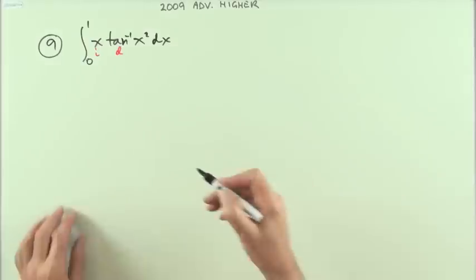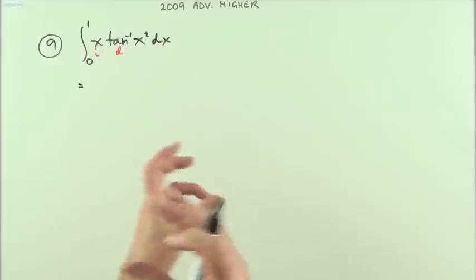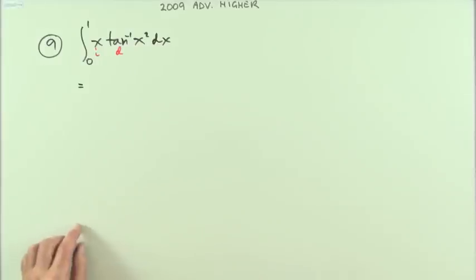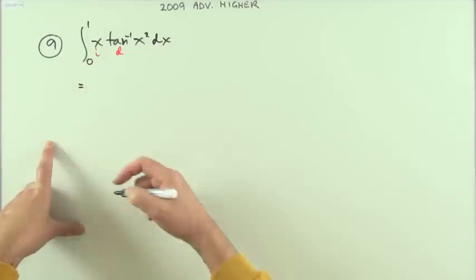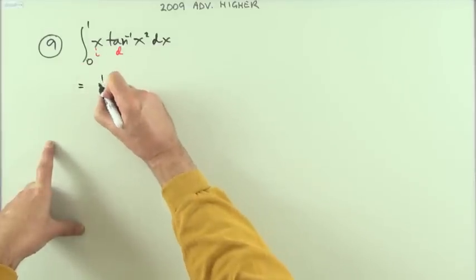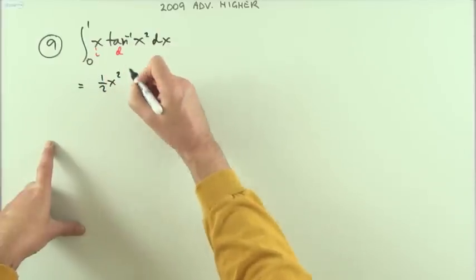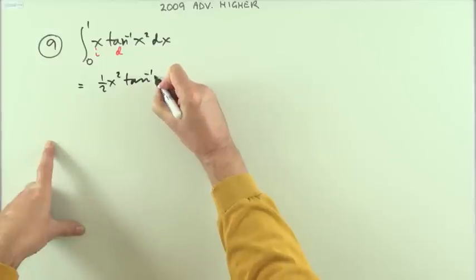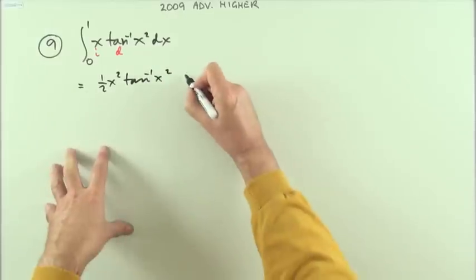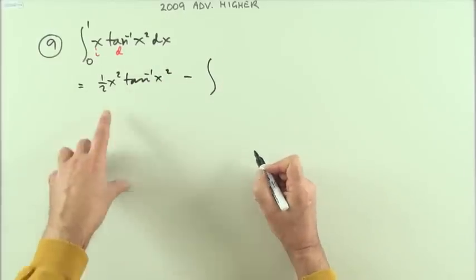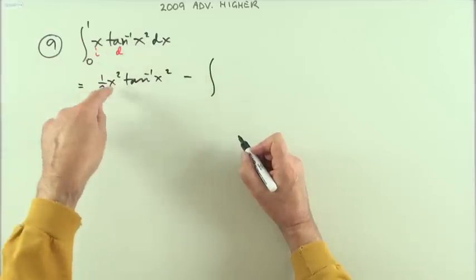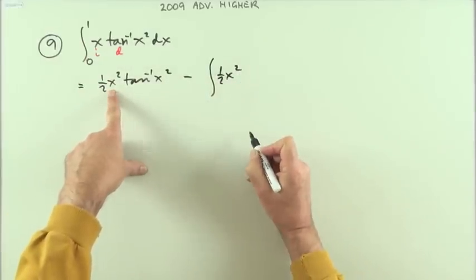And then just use the pattern that came from that reversal of the product rule, which is I carry an integration. So I'm going to integrate first, so x is going to go back up to half x squared and the tan x will just leave itself alone.